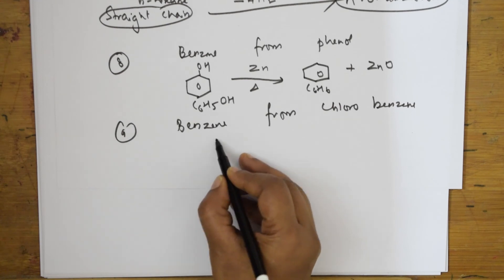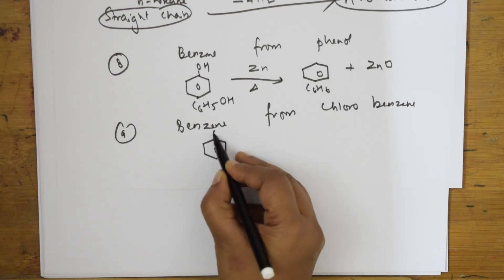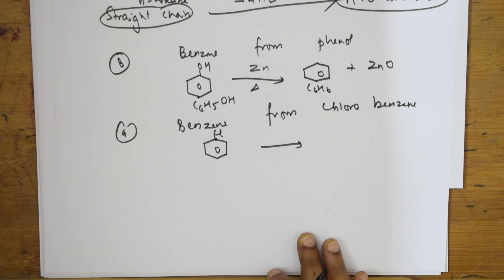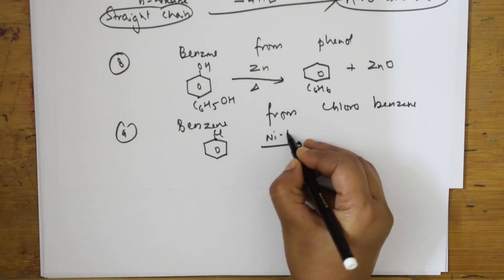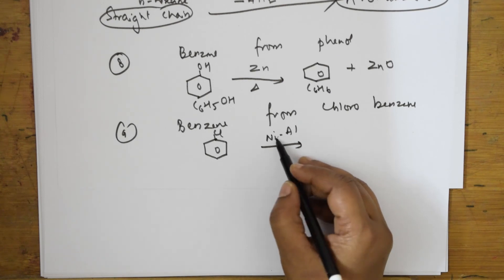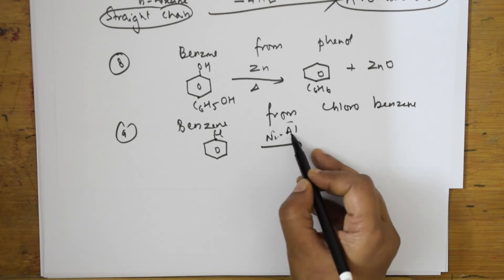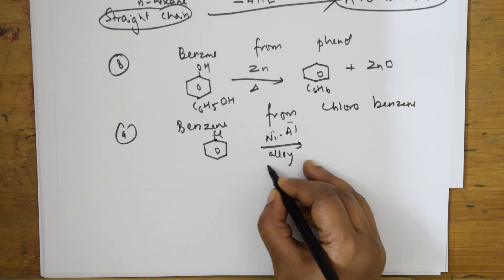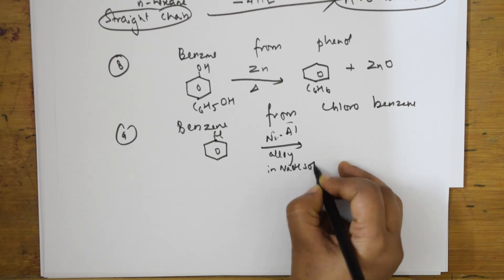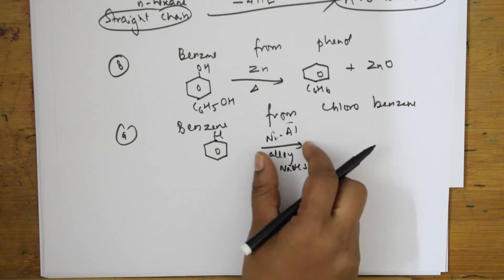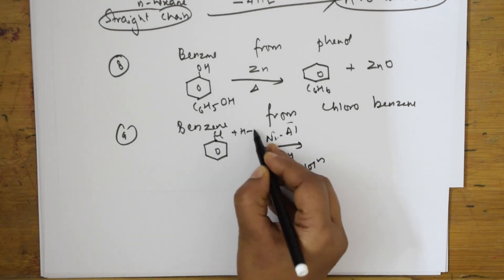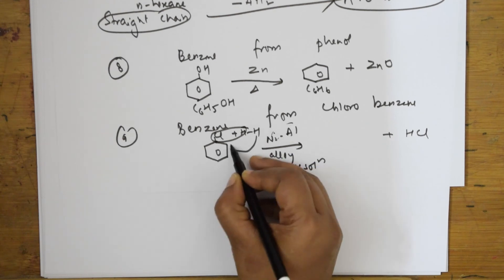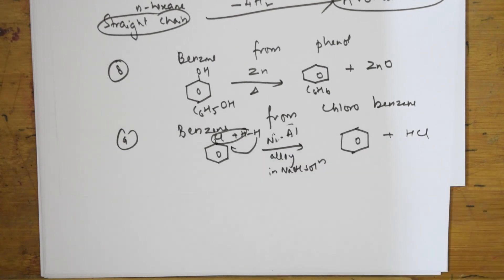Benzene from chlorobenzene: I take chlorobenzene (C6H5Cl) and use reducing agents — a nickel-aluminium alloy taken in sodium hydroxide solution. This alloy is a reducing agent that adds hydrogen. So HCl comes out, and hydrogen adds to the ring, forming benzene.